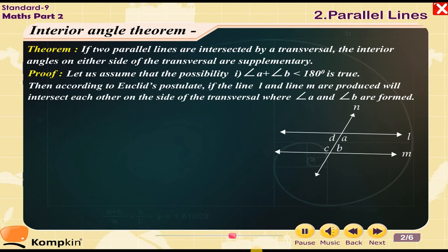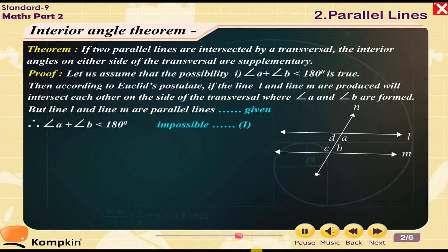According to Euclid's postulate, if angle A plus angle B is less than 180 degrees, then if line L and line M are produced, they will intersect each other on the side of the transversal where angle A and angle B are formed. But line L and line M are parallel lines. Therefore, angle A plus angle B being less than 180 degrees is impossible.